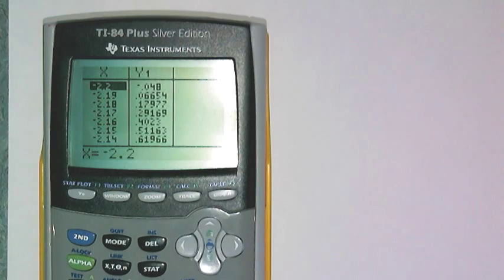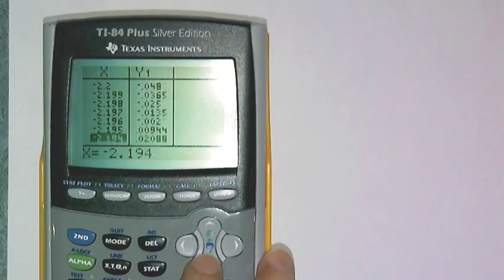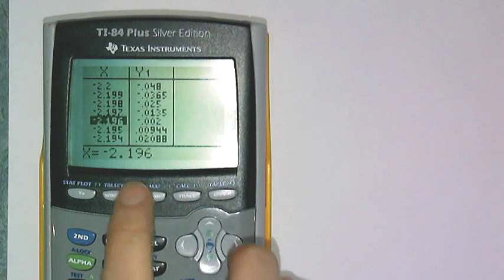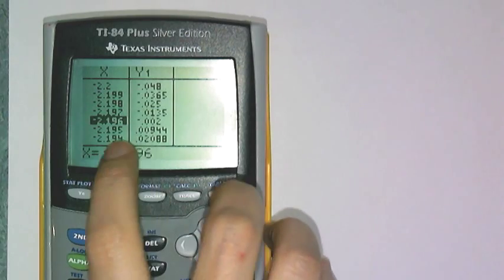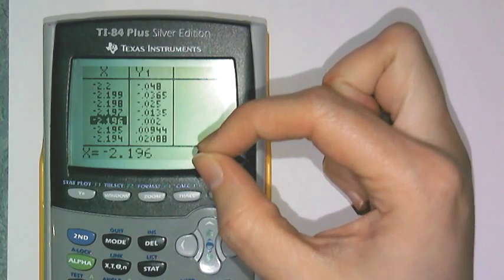I can continually fine tune that interval. Now I know that it's between negative 2.196 and negative 2.195, and I can continually do that to shrink that interval further and further.